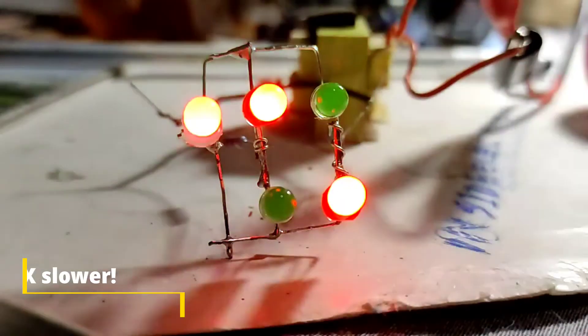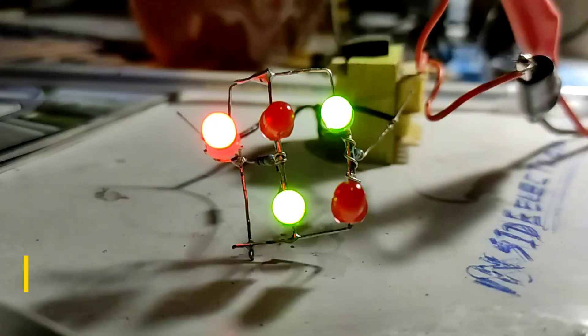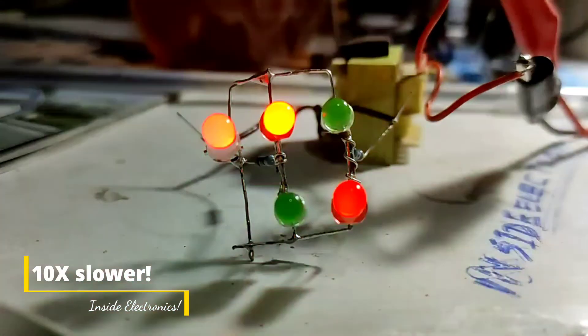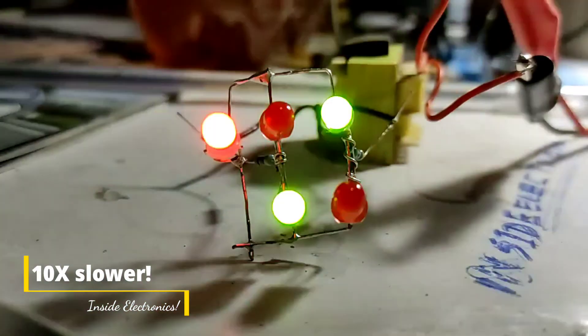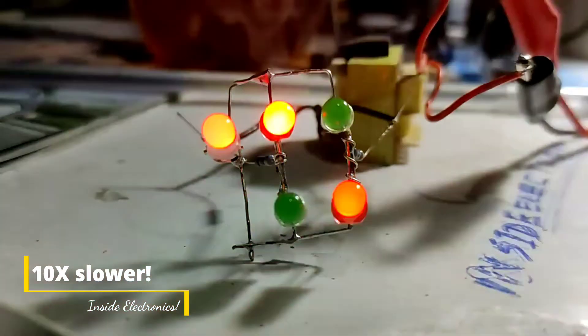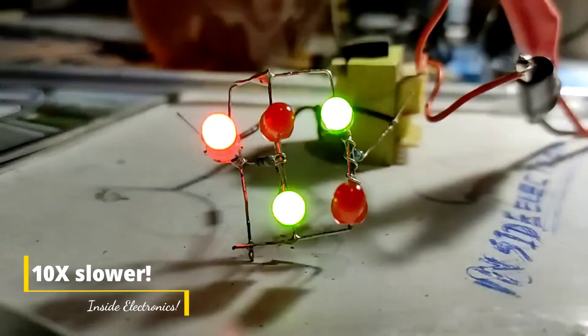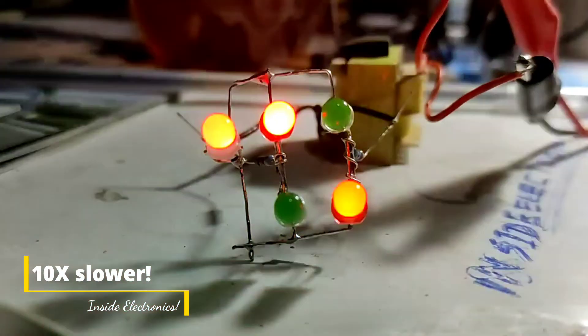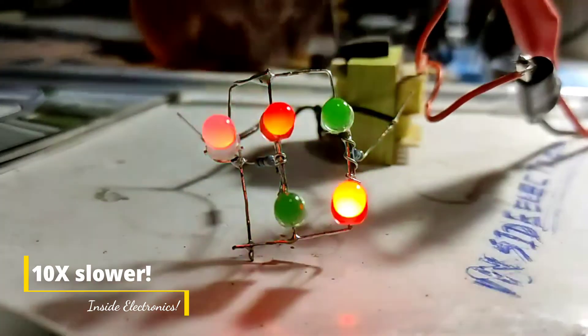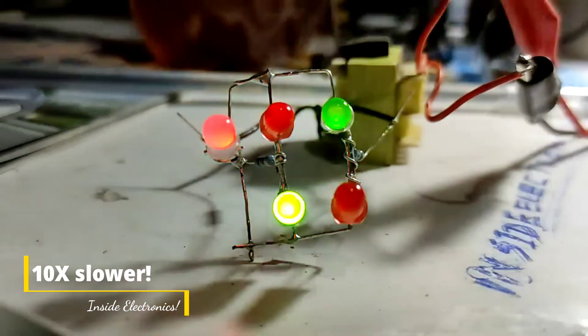What seemingly looks like a continuously on load on the normal footage, you can now see the load is actually getting turned on and off a number of times every single second because this is unregulated DC.